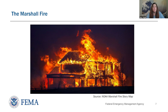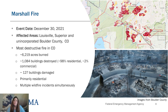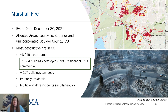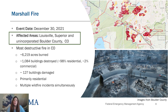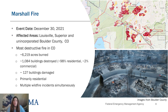The Marshall Fire was the most destructive wildfire incident in Colorado history. Approximately 6,000 acres were burned, over 1,000 buildings destroyed, and it resulted in over $500 million in damages. It was a wind-driven wildfire that started on the morning of December 30, 2021, in Boulder County, Colorado. The fire quickly spread to the town of Superior, and later to unincorporated Boulder County and the city of Louisville, due to high winds gusting up to 115 miles per hour. By the next day, the winds died down and heavy snow extinguished the fire.